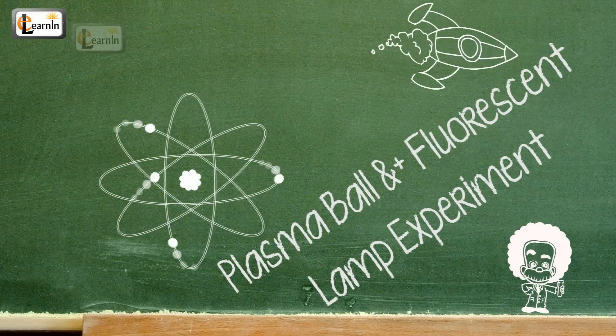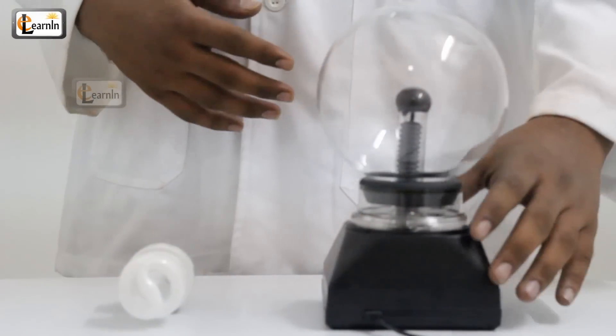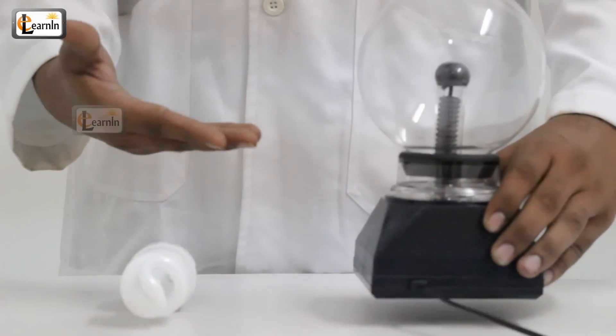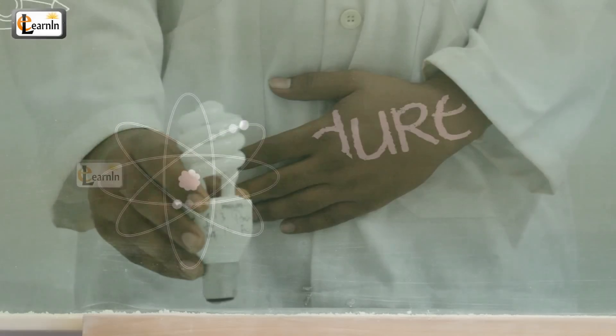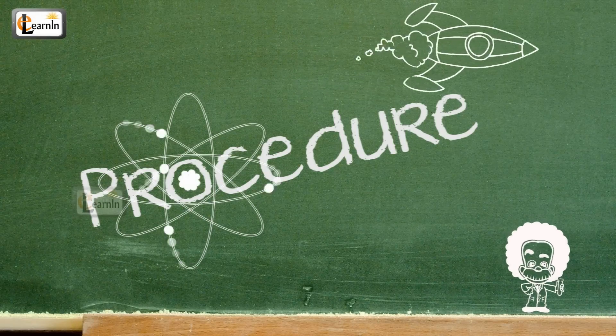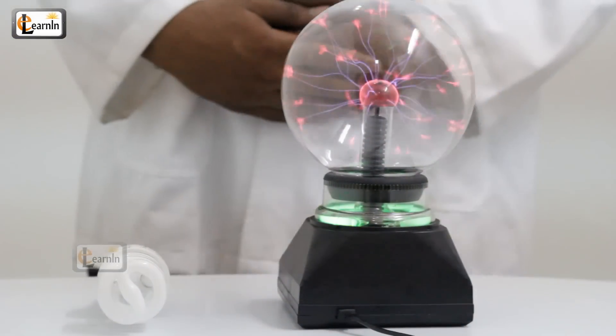Plasma ball and fluorescent lamp experiment. For this experiment, you'll need a plasma lamp and a fluorescent bulb. Procedure: First, switch on the plasma light.